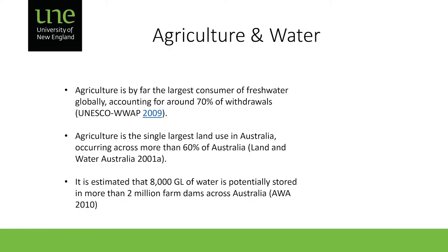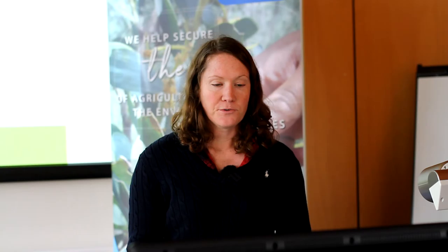In Australia, agriculture is our single largest land use — more than 60% of Australia is taken up for it. In farm dams specifically, there is over 8,000 gigalitres of water stored, with estimates of between 2 million and 5 million farm dams throughout Australia. The management of those systems is really important, and freshwater systems have responded to this change.